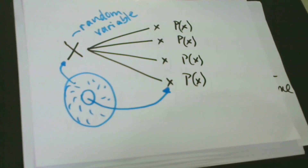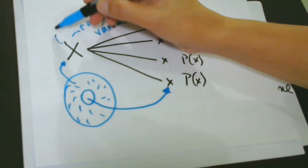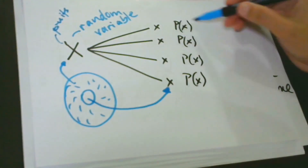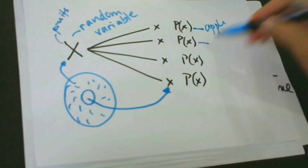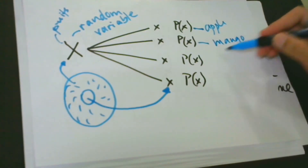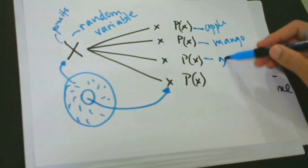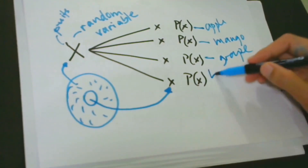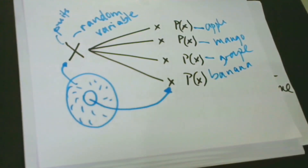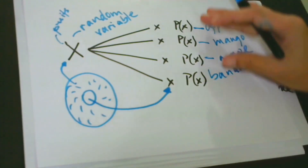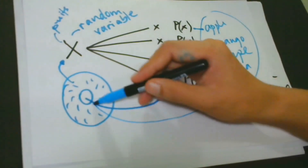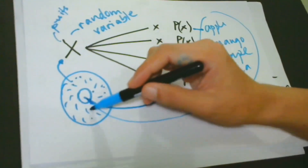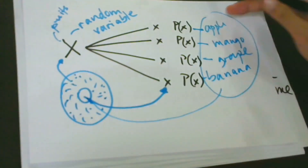For better understanding, let's relate this to real life situations. For example, you love fruits — apples, mangoes, grapes, and bananas. The big X here represents fruits. The first small x is apple, the second is mango, the third is grape, and the last one is banana. For so many fruits in the world, these are the four fruits that you love, so they belong to one set. Other fruits can be here too, but you don't love them as much as these four.